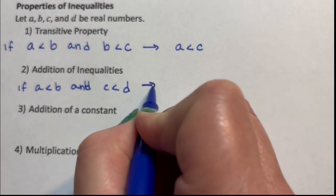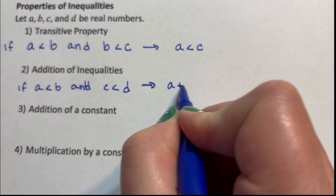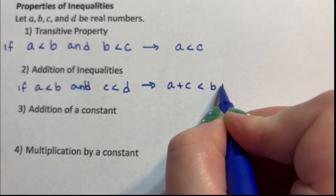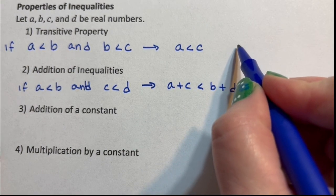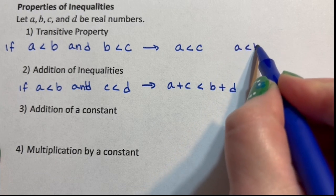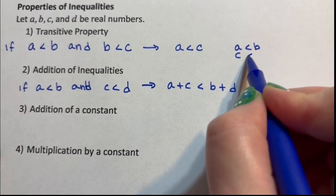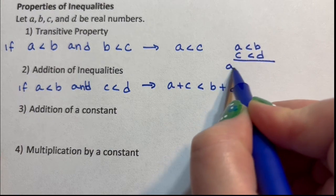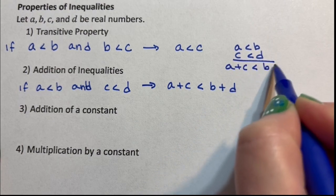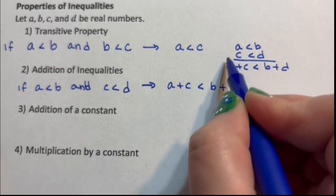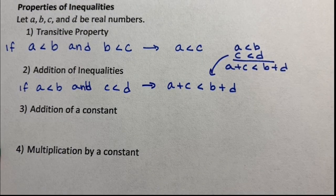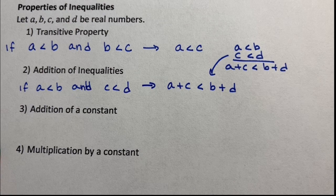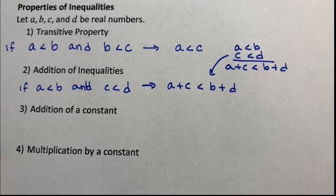Then, A plus C is less than B plus D. This looks a lot like A is less than B, C is less than D. Add down: A plus C is less than B plus D. That's what's going on here. We're just literally lining them up, adding down.